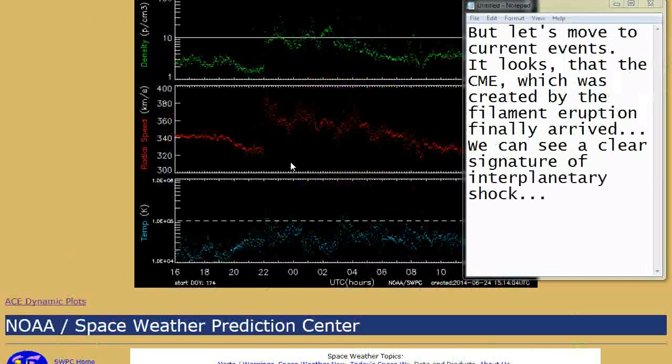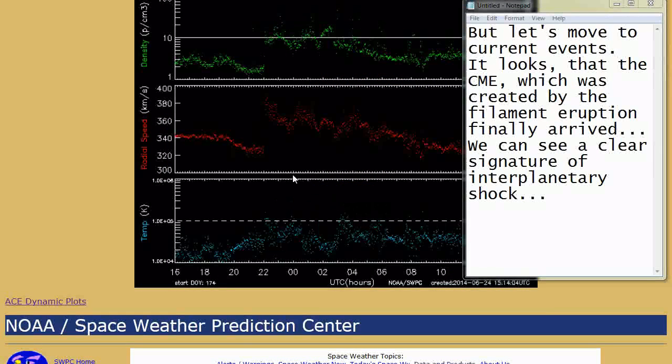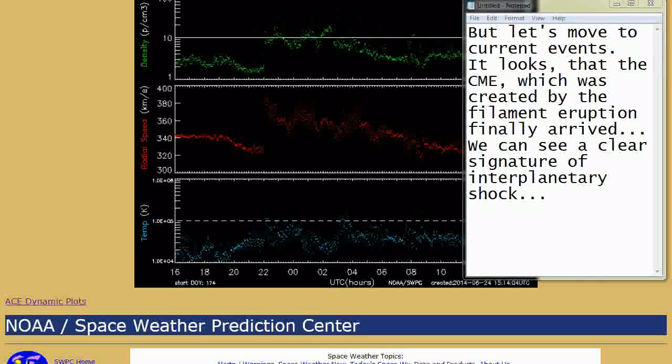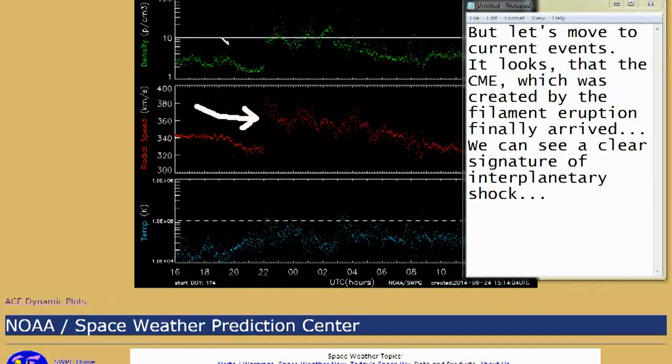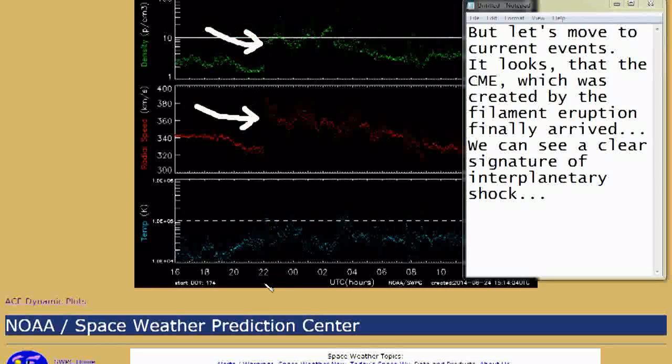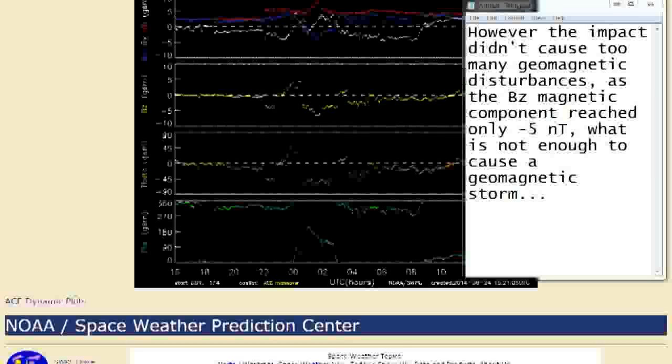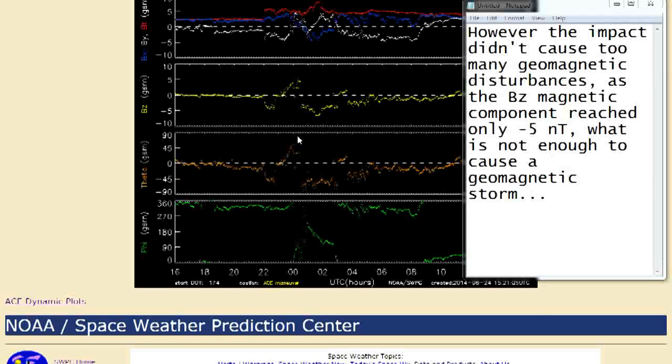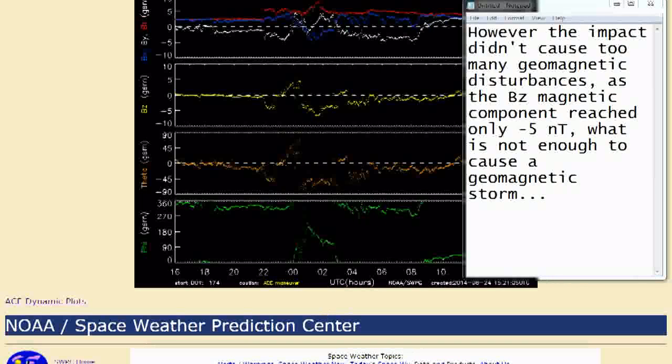But let's move to current events. It looks that the CME, which was created by the filament eruption, finally arrived. We can see a clear signature of interplanetary shock. However, the impact didn't cause too many geo-magnetic disturbances, as the BZ magnetic component reached only minus 5 nanoteslas, what is not enough to cause a geo-magnetic storm.